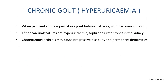Before discussing chronic gout treatment, let's briefly review chronic gout. When pain and stiffness persist in a joint between successive attacks, gout becomes chronic. Cardinal features include hyperuricemia, formation of tophi — uric acid crystal deposits appearing as chalk-like stones under the skin in areas like pinna, eyelids, and nose — and formation of urate stones in the kidney. Chronic gouty arthritis may cause progressive disability and permanent deformities.